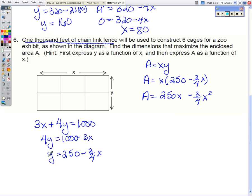Now, I purposely wanted to solve for y knowing my denominator would be an even number so that when I take the derivative, this fraction will reduce. So A prime is 250 minus 6 fourths x. Well, 6 fourths I can rewrite as 3 halves and set my derivative equal to 0.